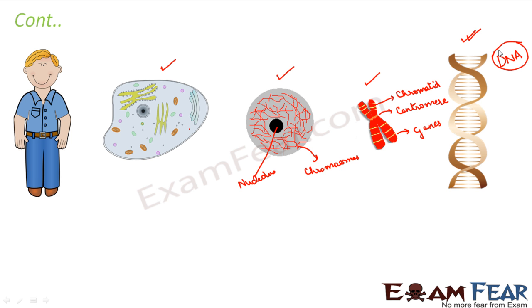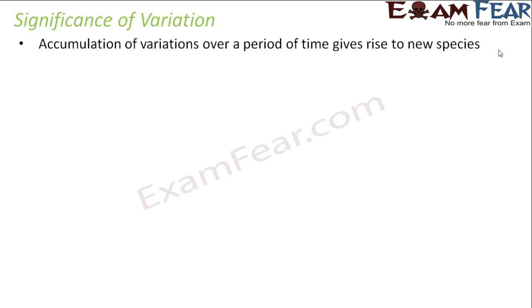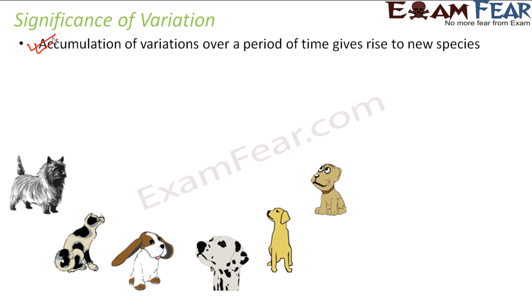Now let us understand the significance of variation. Whenever there is variation, over a large number of years it will give rise to a new species — accumulation of variations over time gives rise to new species. We can see so many different varieties of dogs generated because of small variations. Variation also helps in the survival of a species over time.